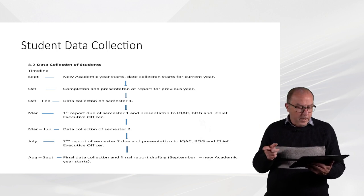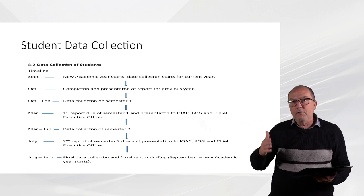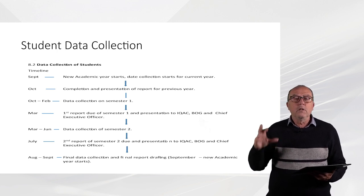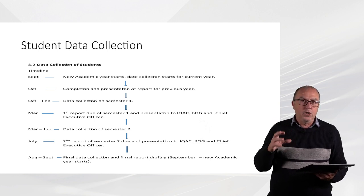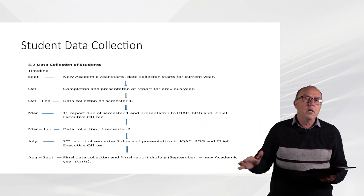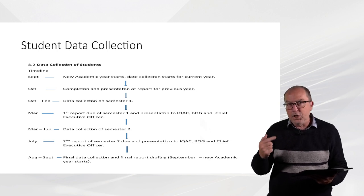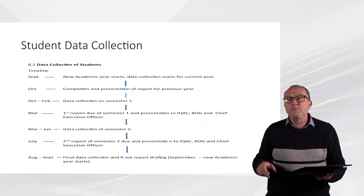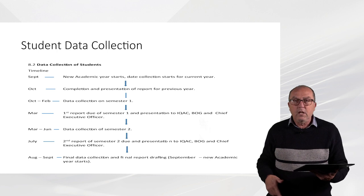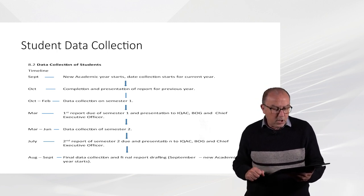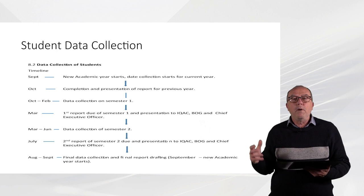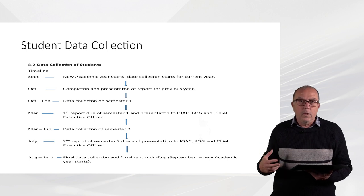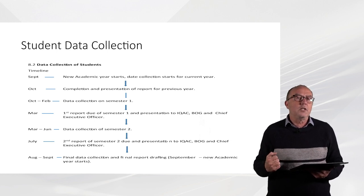From October to February — because February is the end of the first semester of the new academic year — there is a report about the first semester on students. This is where we monitor the first semester and actually issue a report about it. In March, this report is presented to the Board of Governors, the Internal Quality Assurance Committee, and also to the GIF Executive Officer, because all this information we manage it, but we also communicate it with these stakeholders.